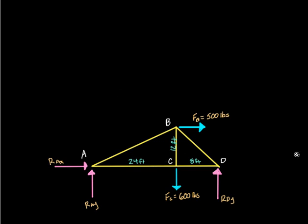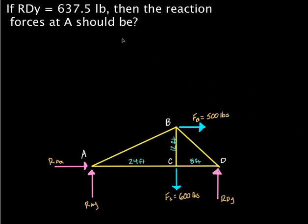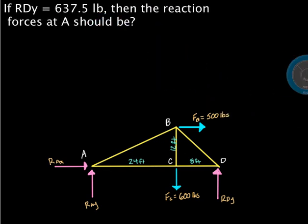We're going to look at how these things get affected, and we're going to ask a question. So our question is, if R_DY is 637.5 pounds, so it's a positive 637.5 pounds, then what should the reaction forces at point A be? What should R_AX and R_AY be? We're going to look at how we can figure this out.